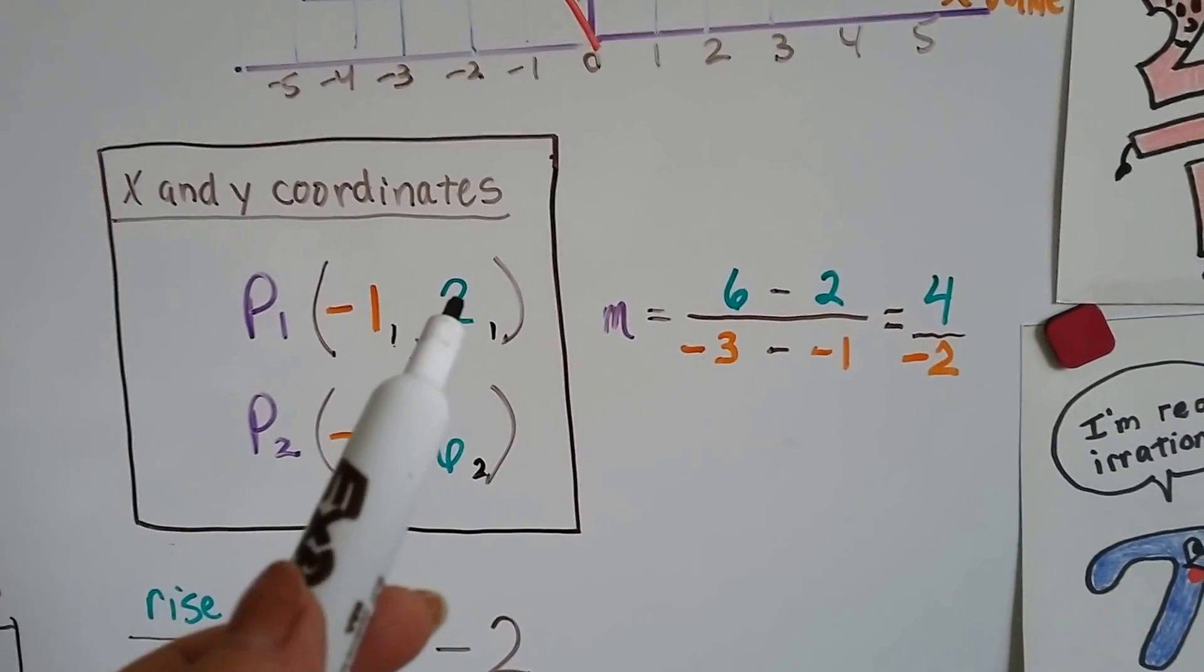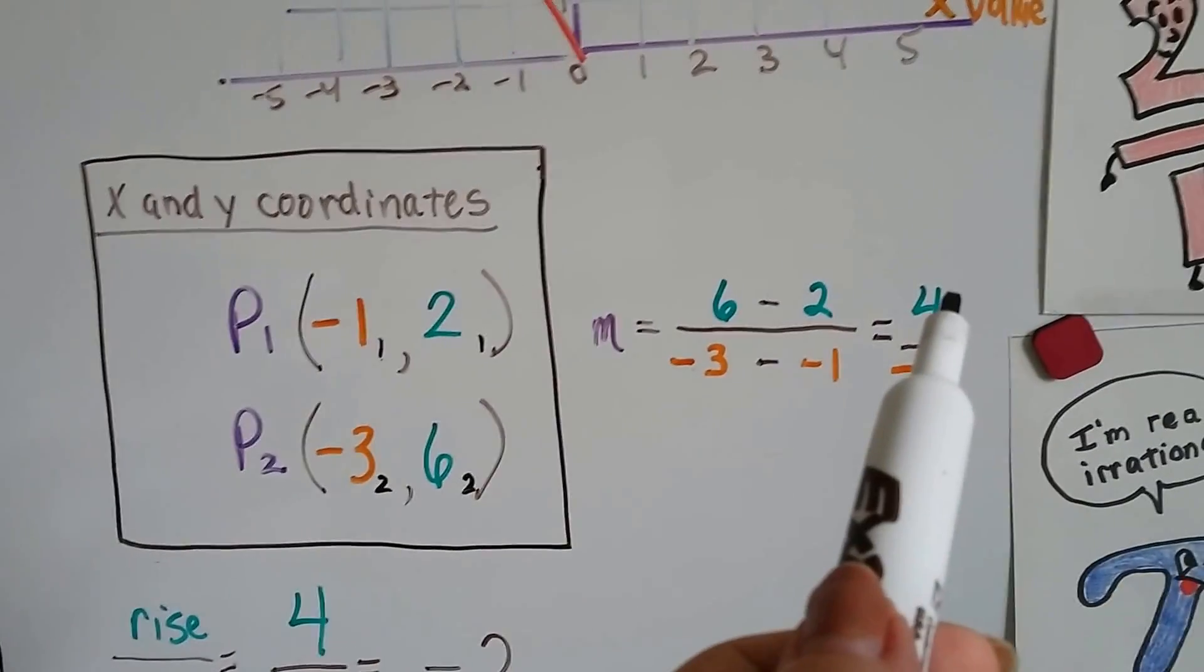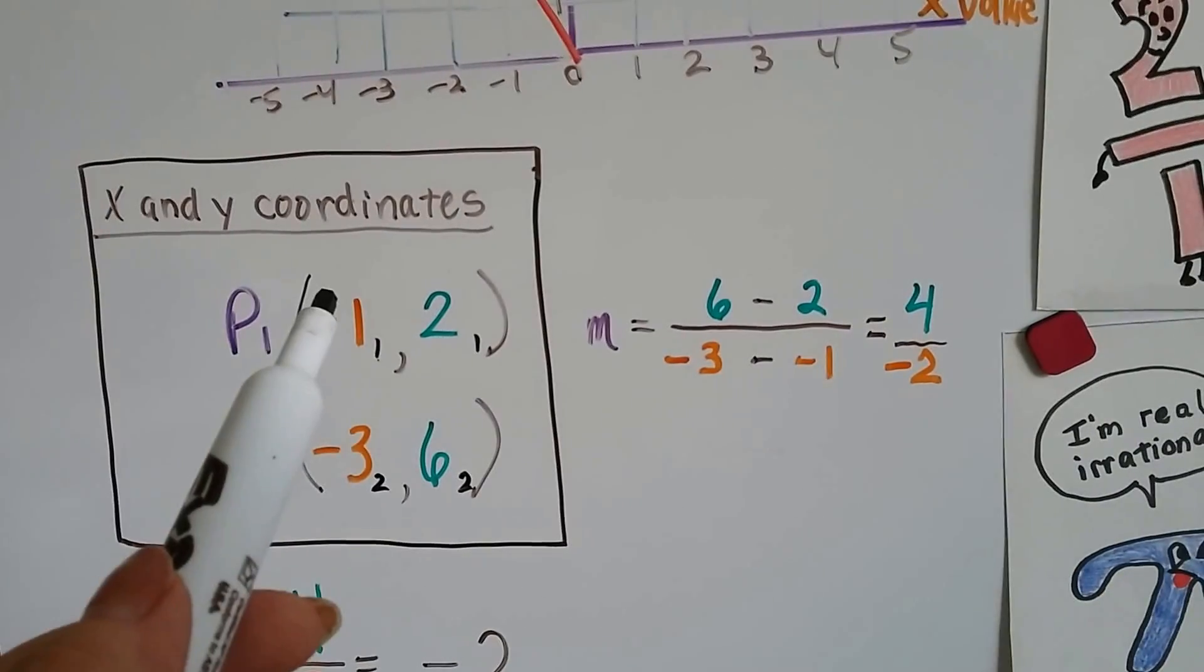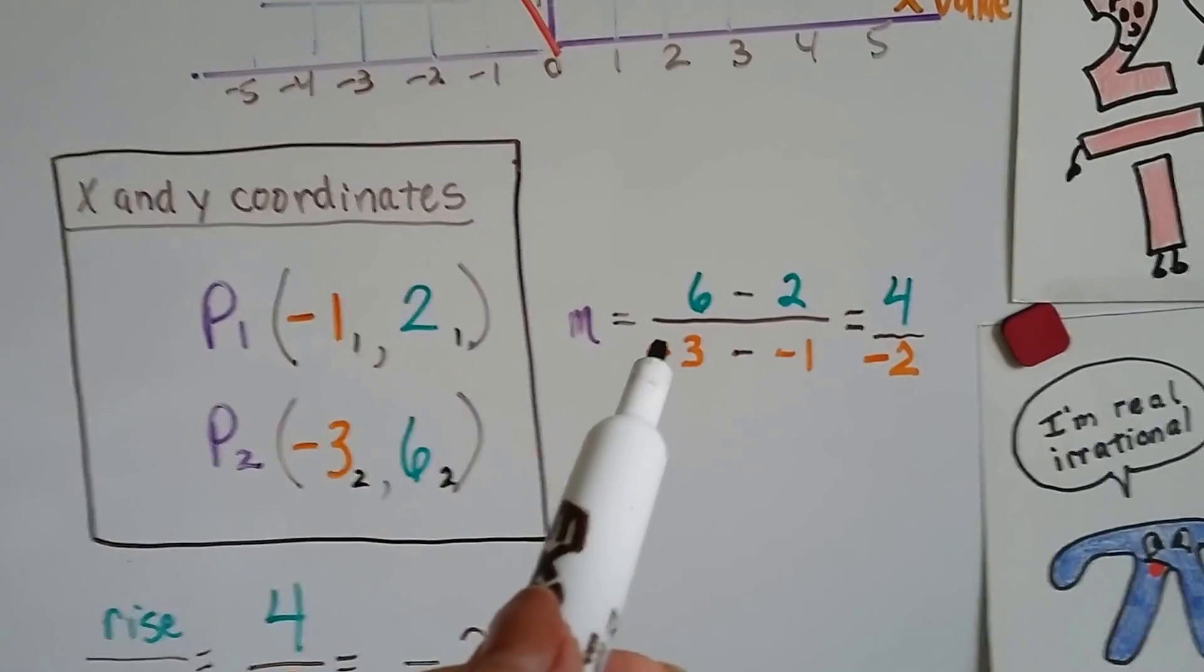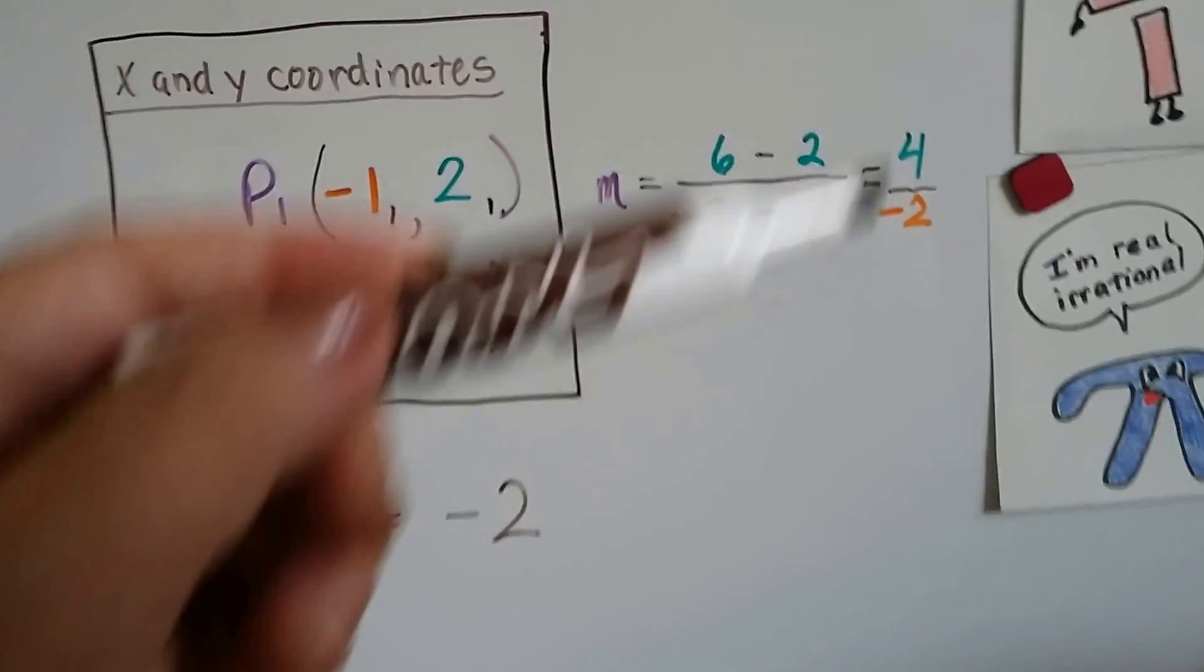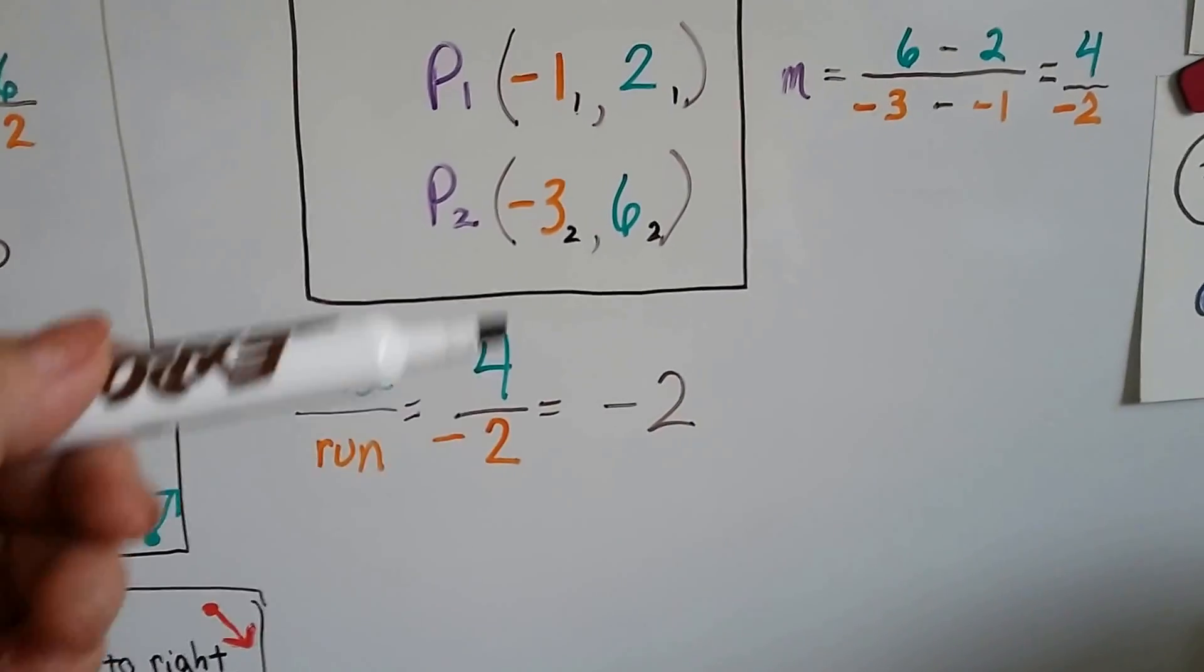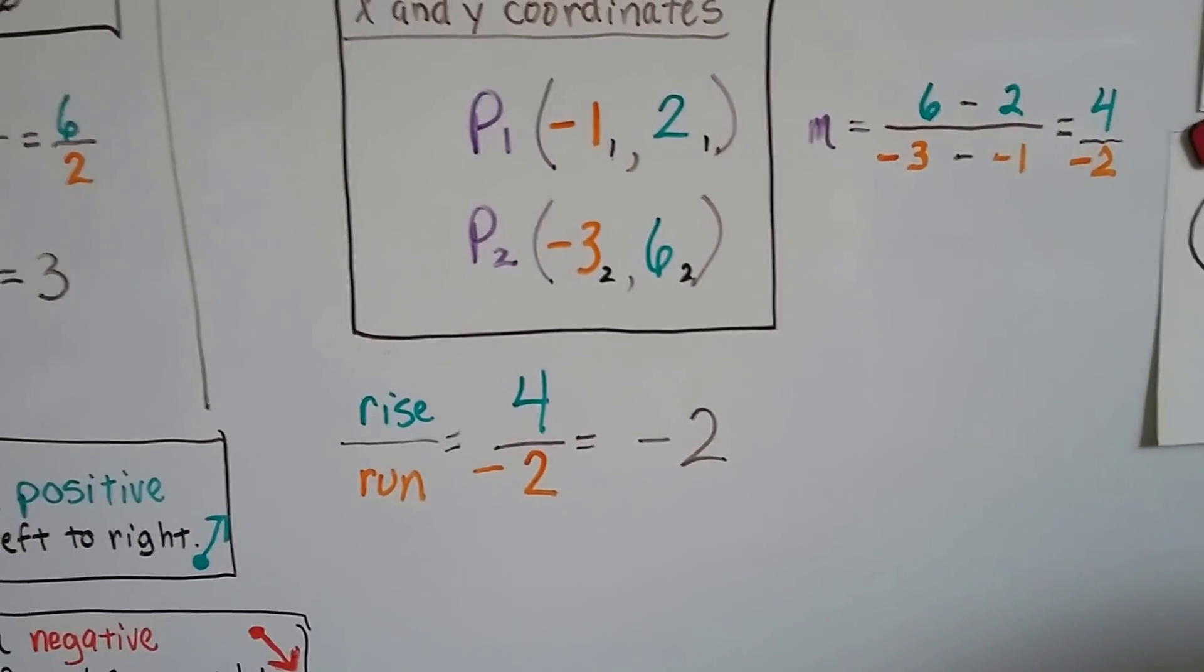Now when we do our subtraction, we've got 6 take away 2 for our y2 take away y1. That's a 4 difference. And negative 3 take away negative 1 for x2 take away x1. Negative 3 take away negative 1 is going to be a negative 2. Now we've got 4 over negative 2. That's our rise over our run. 4 divided by negative 2 is negative 2. We ended up with a negative slope.